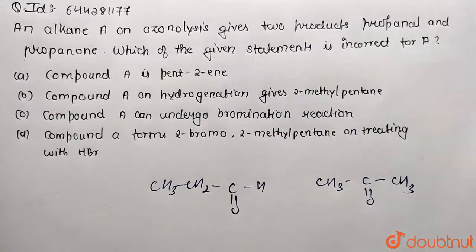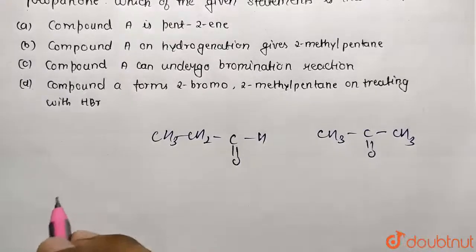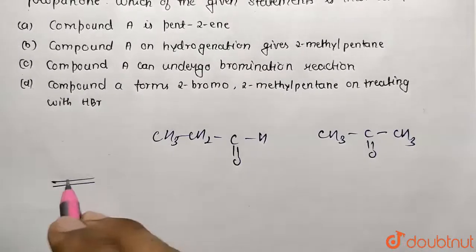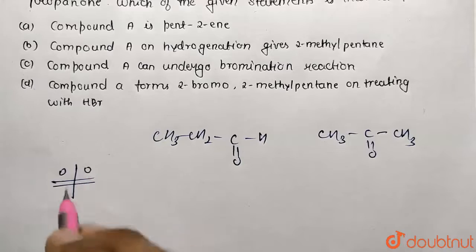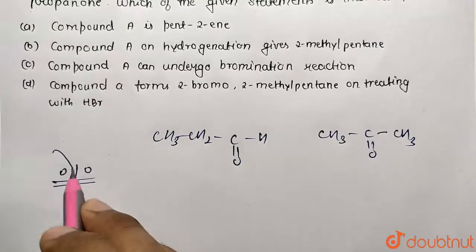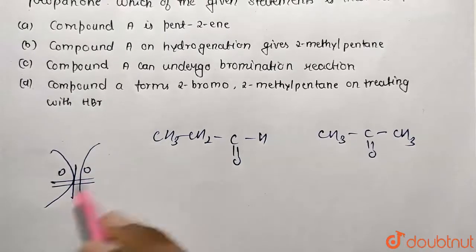Which statement is incorrect about A? We need to find A first of all. Do you know how ozonolysis is going to take place? We are going to have cleavage of double bond at this side, and one oxygen is distributed to both side groups.